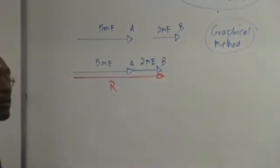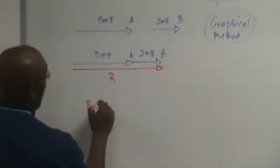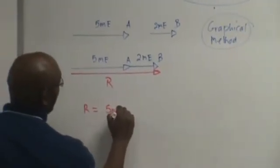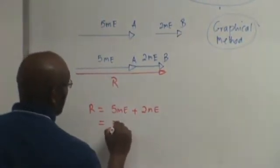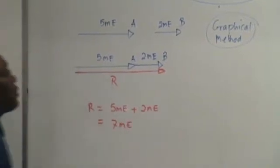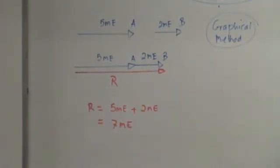We call this R. So now R is 5 meters east plus 2 meters east, 7 meters east. So that's the first example.